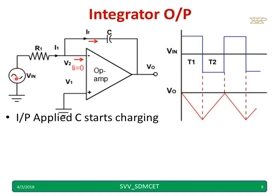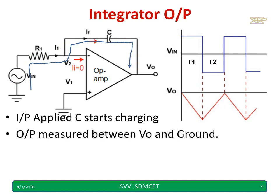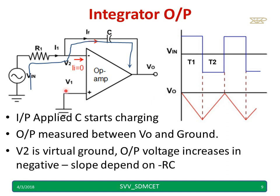Input is applied. Then C starts charging. And this is the path for C starts charging. The output is measured between V0 and the ground terminal. When I say V1 is grounded, V2 is a virtual ground. Output is measured between the V0 and the ground or V0 and this terminal.